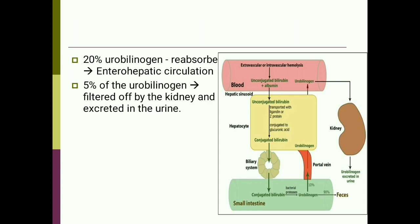Twenty percent of this urobilinogen from the intestine is reabsorbed and goes back through the portal system to the liver. From the liver, some urobilinogen escapes into the general circulation, and some is re-excreted into the bile — a process known as enterohepatic circulation, as shown in the diagram.